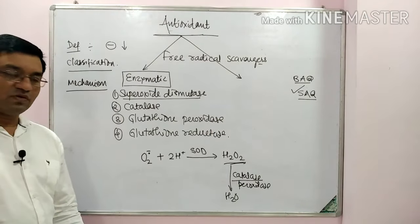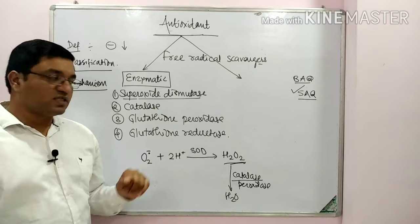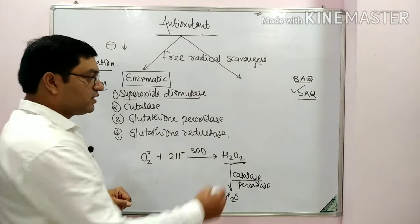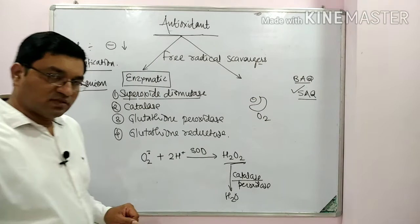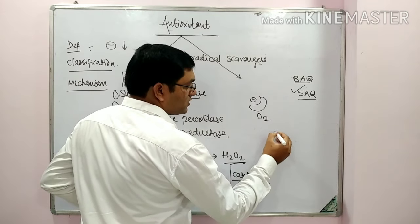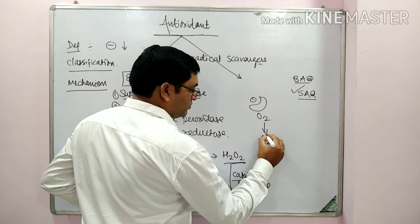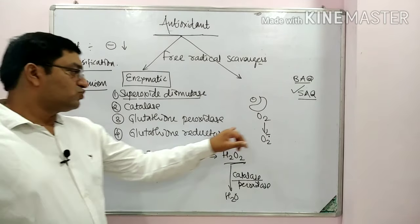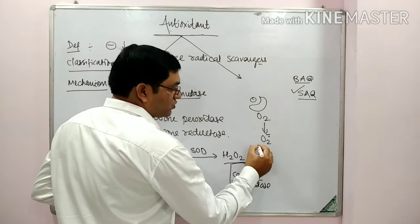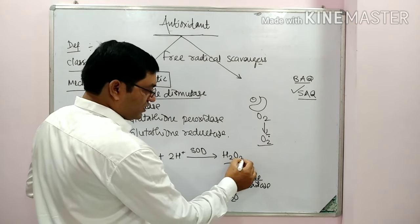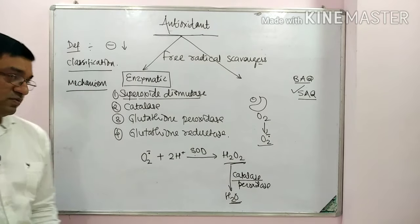Superoxide dismutase is also important in the respiratory burst. During engulfment of bacteria by macrophages, O₂ demand increases. This O₂ is converted into superoxide radicals by the NADPH oxidase system. The superoxide is then converted into H₂O₂ by superoxide dismutase, which is further converted into water by catalase and peroxidase.